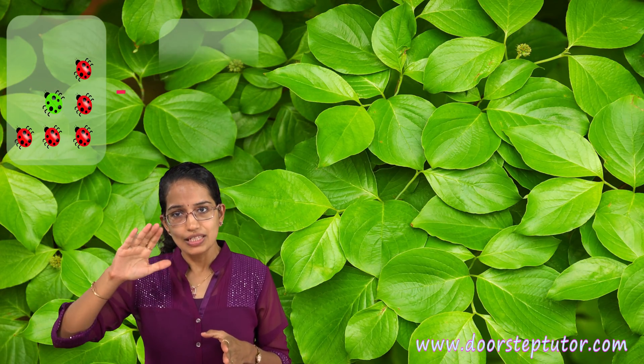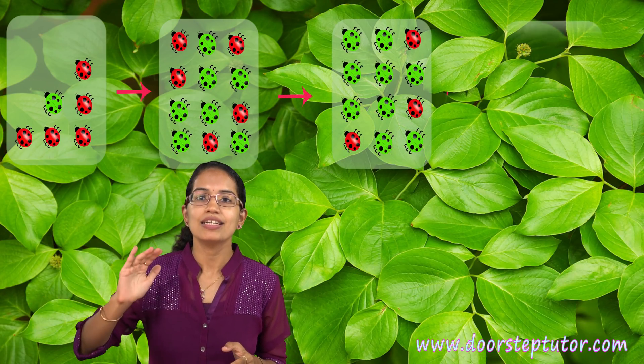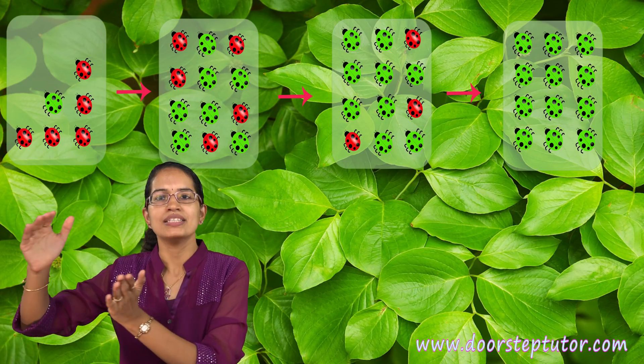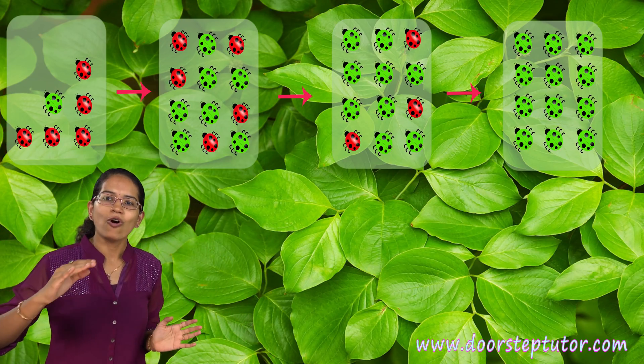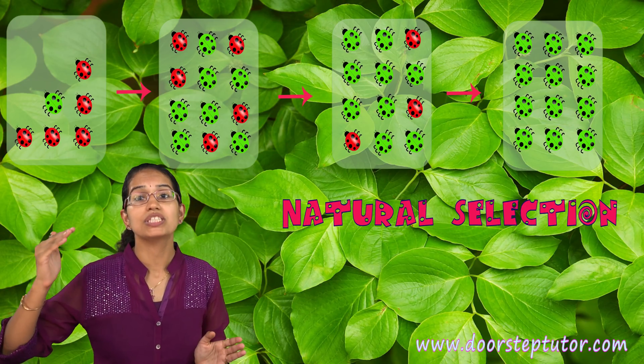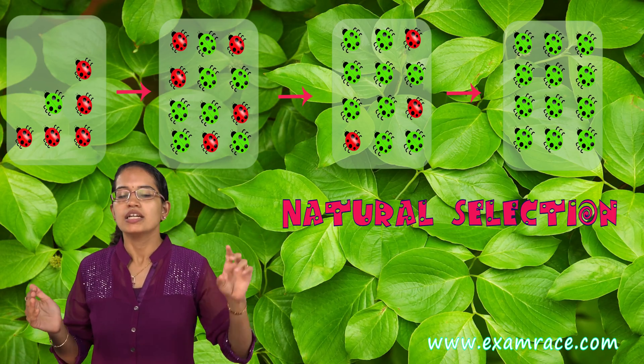Now when the crow was there to eat the beetles, the crow could easily find out the red beetles in the green grass and could eat all of those. However, the green beetles were camouflaged. As a result, over the years, the population of the green beetles increased, and that was a process of natural selection which Darwin later on tried to explain as survival of the fittest.